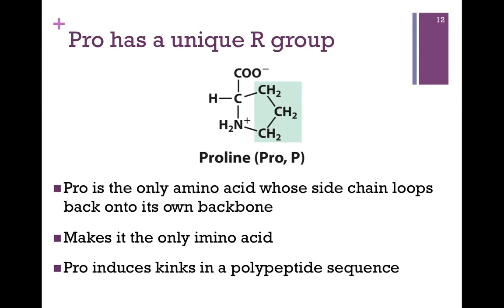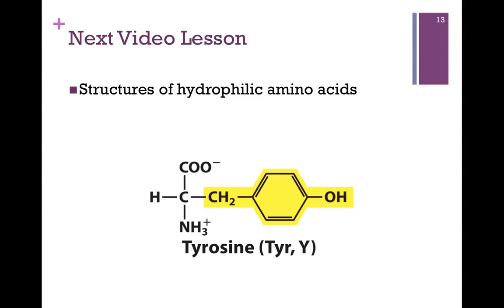Here's proline, a rather unusual amino acid. It's the only one whose side chain loops back on its own backbone — the alpha amine is right here, and that's what we mean by it looping back on itself. Because of this, it has a unique feature in that it tends to induce kinks in polypeptide sequences. So again, the identity of that side chain — its chemical group and structure — has much to do with its function within proteins. In our next lesson, we'll look at the structures of the hydrophilic amino acids.